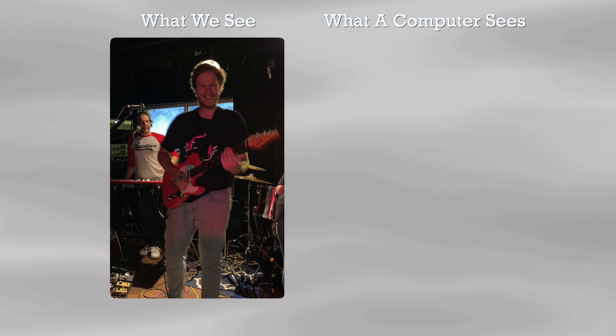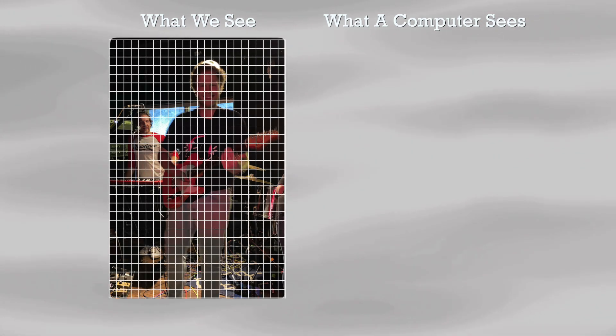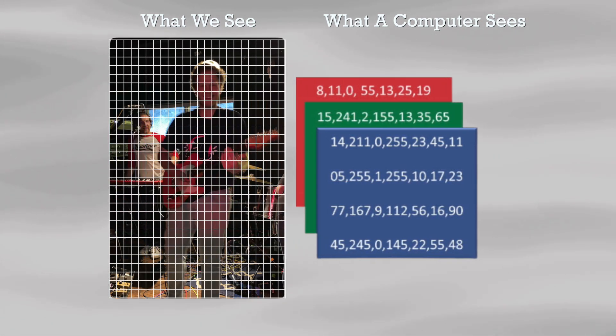This number sequencing happens across all of the millions of pixels on our screen. So to a computer, all a picture is, is a giant collection of numbers. So how can we take a bunch of numbers and encode a secret password within there?